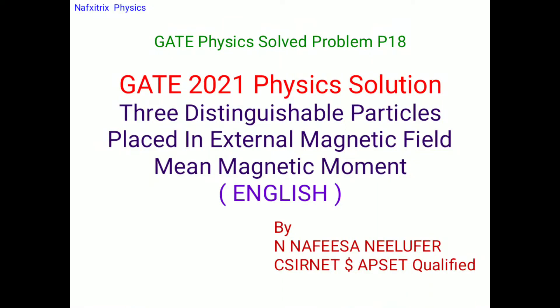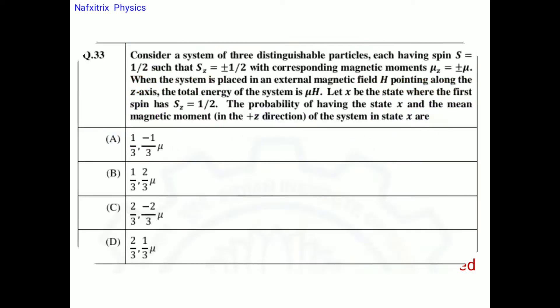Let's discuss a problem from GATE 2021 Physics related to three distinguishable particles placed in an external magnetic field. We need to find the mean magnetic moment. The problem: consider a system of three distinguishable particles.